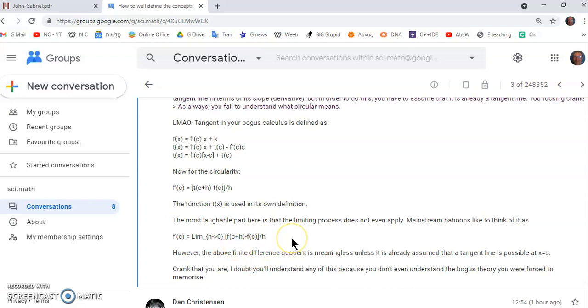So the most laughable part here is that the limiting process does not even apply. Mainstream baboons like to think of it as this, but this here is circular because you need to know L. The difference quotient is meaningless unless it is already assumed that a tangent line is possible at x equals c. So as you can see, it's not I who lack the understanding. I understand mainstream calculus better than any professor of mathematics on the planet. There's not a single mathematics educator who understands calculus as well as I do. In fact, the last 400 years, there has not been my equal.